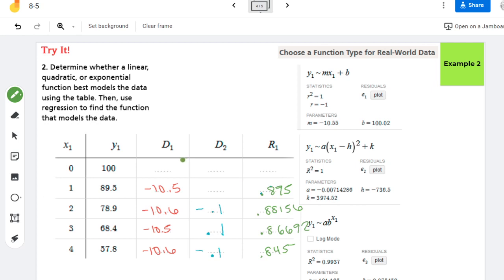All righty, so the ratio here is not constant. So I would probably not stick with exponential. I would probably go with the linear model.